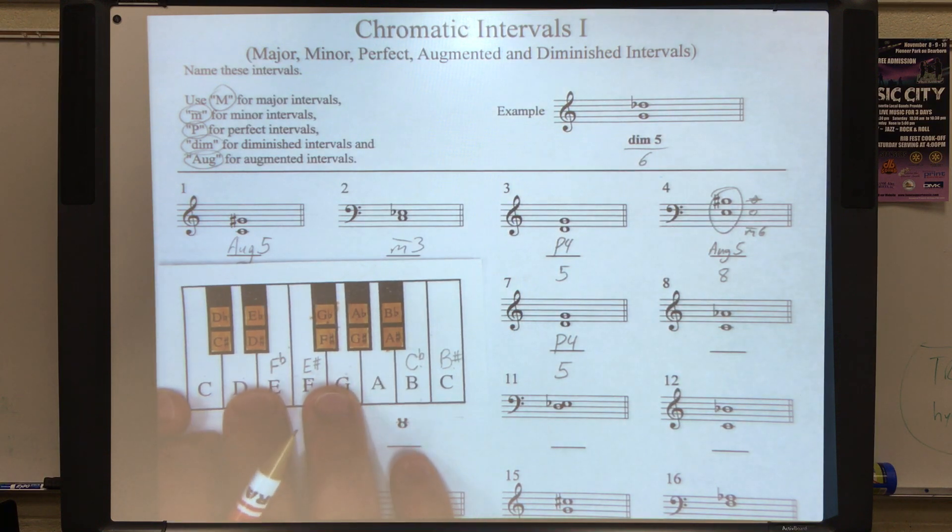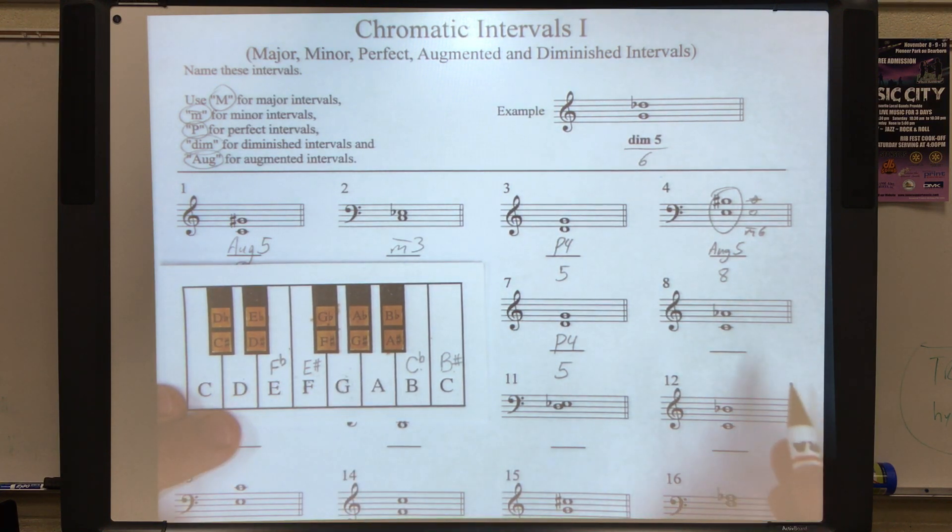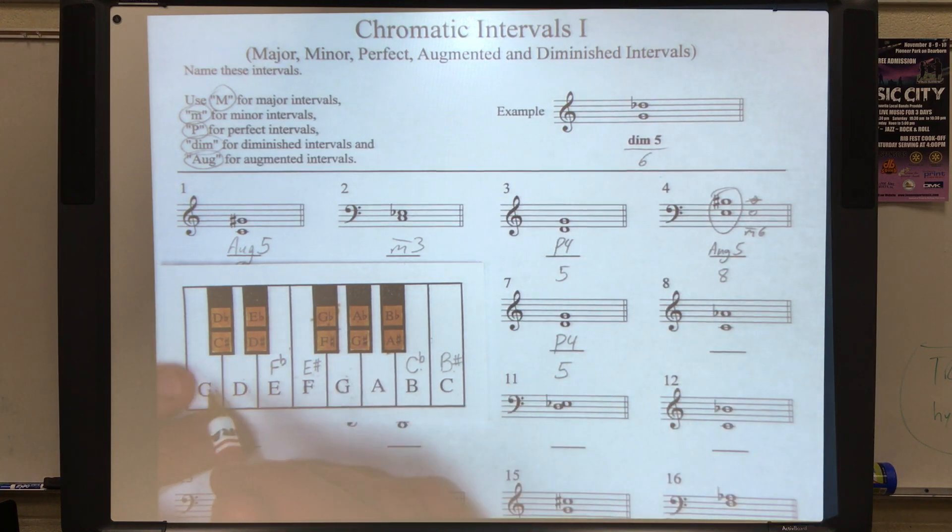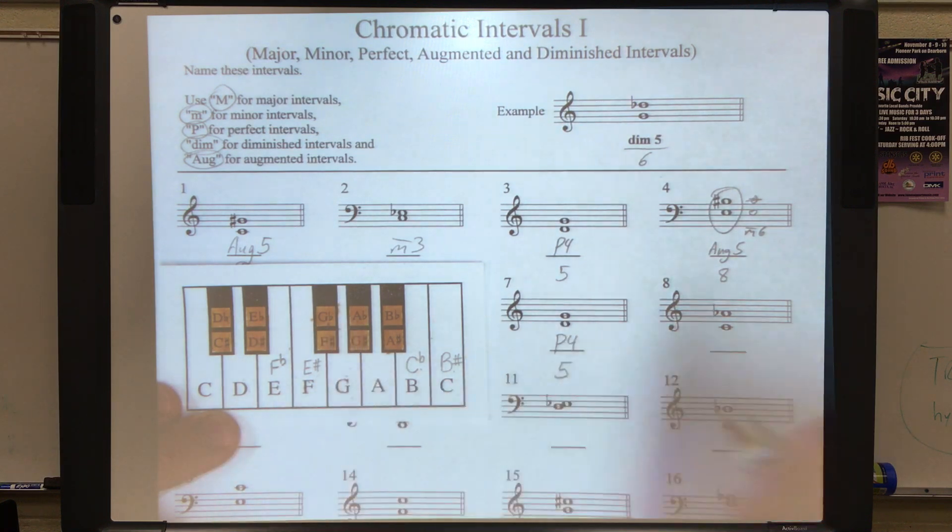Number eight is C to an A flat. Let's find our C. One, two, three, four, five, six, seven, eight. Eight half steps. And because it's one, two, three, four, five, six lines apart, or six staff systems apart, we know that it's a sixth. We just have to figure out what kind of sixth it is. It looks like a minor sixth based on the chart.